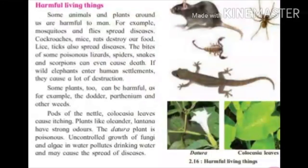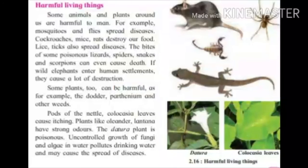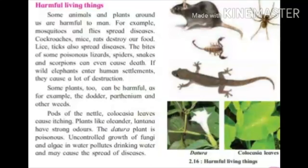Some plants too can be harmful. For example, parthenium and other weeds, pods of the nettle, and colocasia leaves cause itching. Plants like oleander and lantana have strong odors. The datura plant is poisonous. Uncontrolled growth of fungi and algae in water pollutes drinking water and may cause the spread of disease.